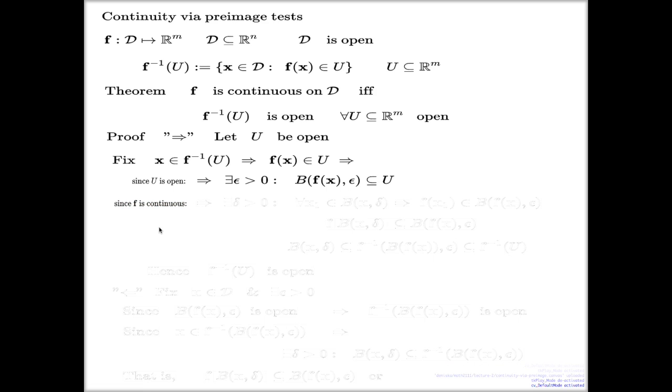Now, since f is continuous, that's the point where we use the second assumption, that f is continuous. What do we know for the continuity? We know that for every positive epsilon, there is delta.